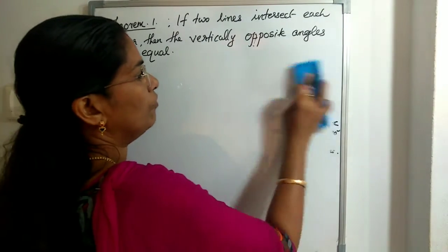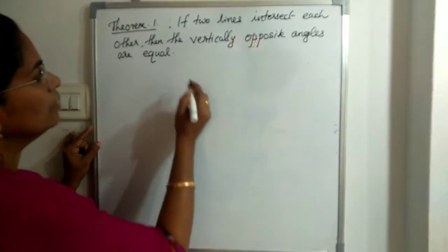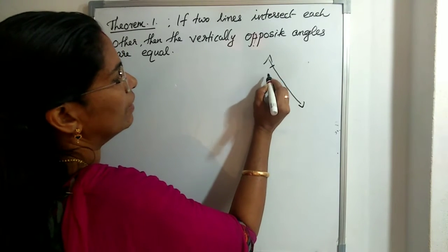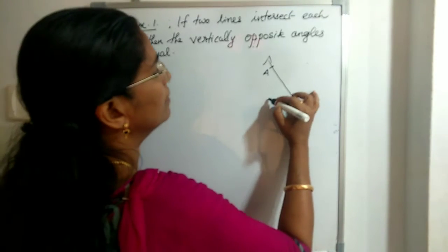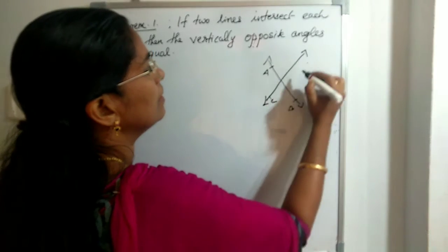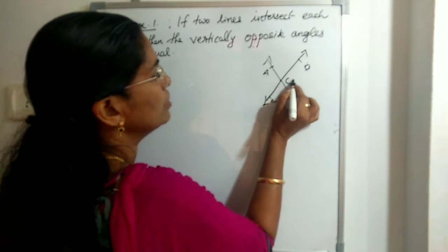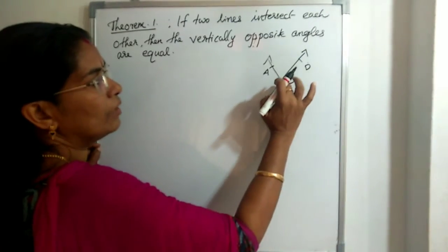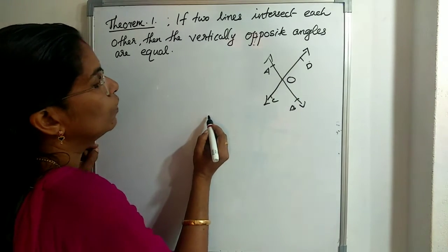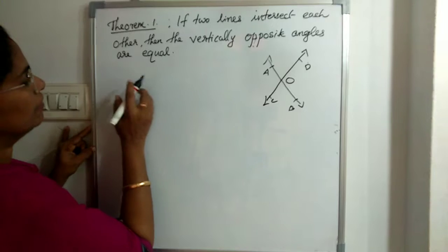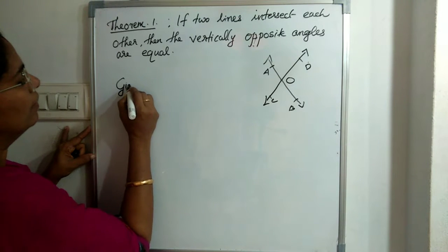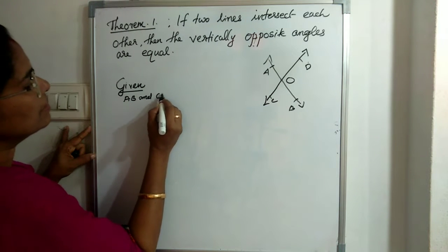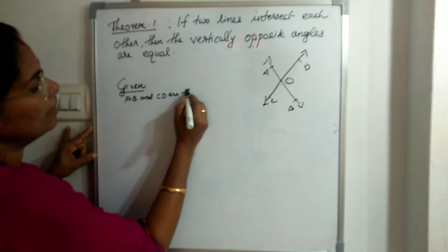To prove this theorem, you need to draw two lines: one line is AB and another line is CD, intersecting at the point O. AB is one line, CD is another line, and these two lines intersect at point O. When proving the theorem, the first thing you write is what is given. Given: AB and CD are two lines.